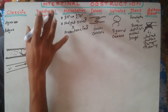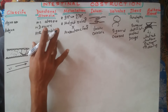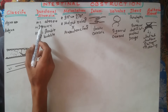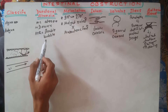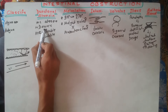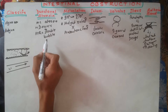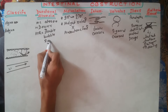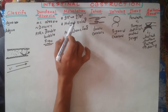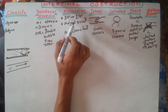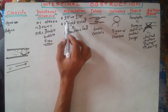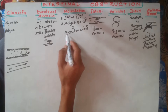In specific review of duodenal atresia: it is associated with Down syndrome, and the double bubble sign on X-ray is very important. For malrotation, this is an abnormal rotation of the midgut with abnormal mesenteric fixation.